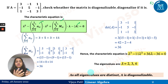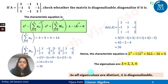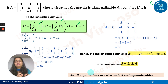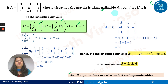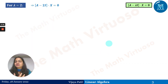Since all the eigenvalues are distinct, A is diagonalizable. We are aware of this theorem: when all eigenvalues are distinct, A is diagonalizable. But we cannot stop here — we have confirmed that yes, A is diagonalizable, but we also have to diagonalize it, which means we need to find the eigenvectors corresponding to these eigenvalues.